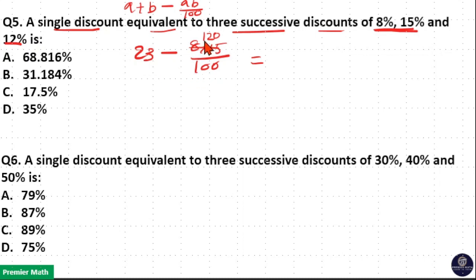So 23 minus 1.2 is 21.8%. Now this is 21.8%. Now take the 21.8% and 12%. 21.8% plus 12% minus 21.8 into 12 by 100.